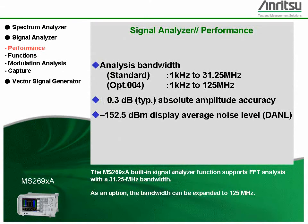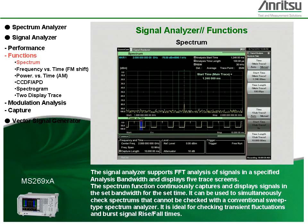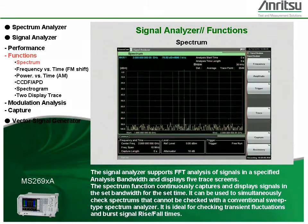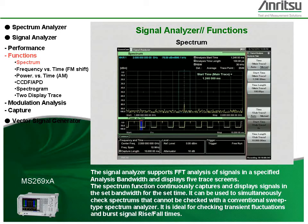The MS269XA built-in signal analyzer function supports FFT analysis with a 31.25 MHz bandwidth. As an option, the bandwidth can be expanded to 125 MHz. The signal analyzer supports FFT analysis of signals in a specified analysis bandwidth and displays five trace screens. The spectrum function continuously captures and displays signals in the set bandwidth for the set time, allowing simultaneous checking of spectrums that cannot be checked with a conventional sweep-type spectrum analyzer.